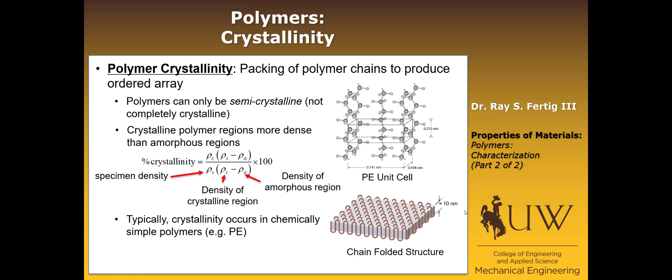And then the final thing I want to say about crystallinity is that the crystallinity of the polymer is going to be affected by the thermal processing. If you cool something really quickly, then the polymer doesn't have time to move and to form the crystalline structures that it might want to ordinarily. And so the rates at which you process that is going to affect the crystallinity of the polymer.